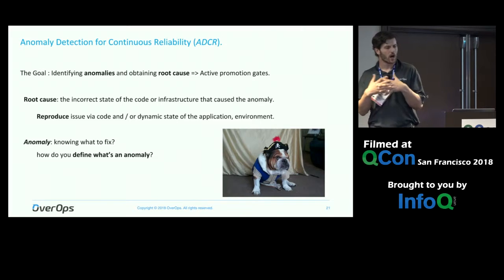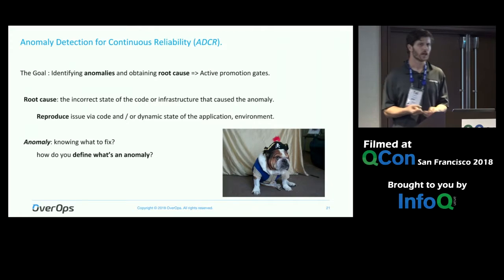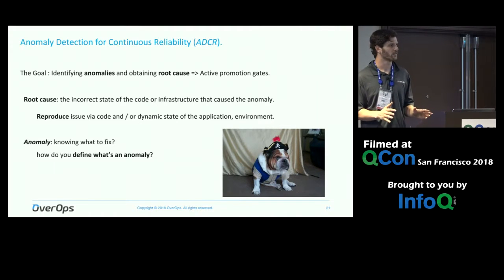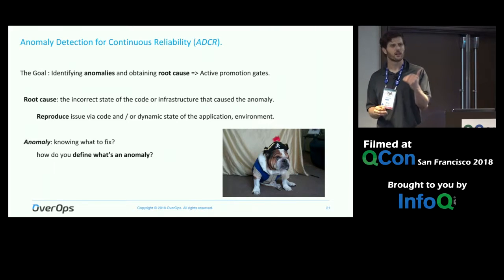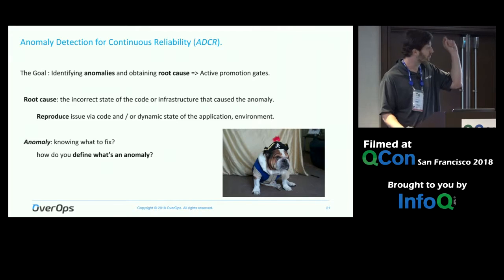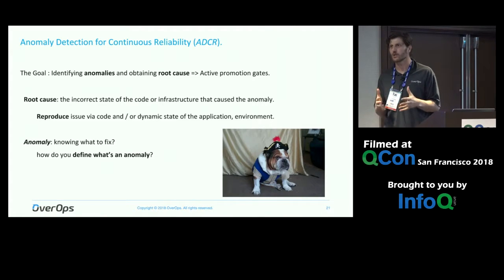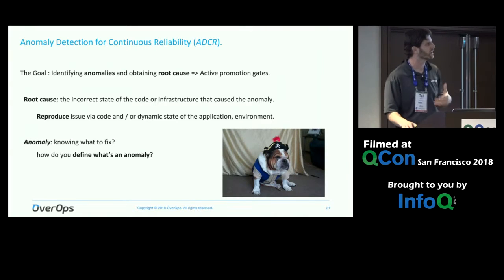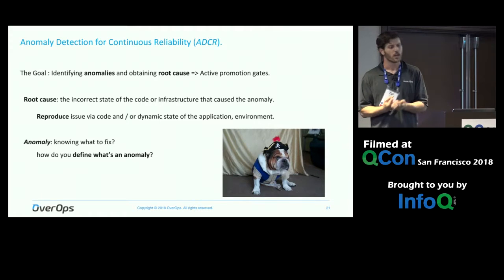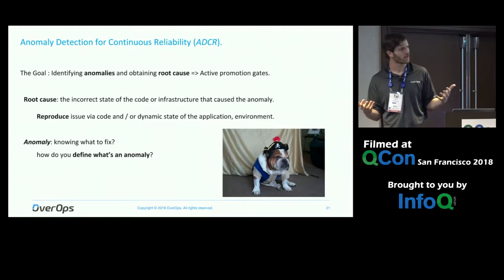Our goal as developers and DevOps, if I break it down to its two most basic core components, is we want to identify anomalies and we want to know what the root cause is. When we ship code out, we want to know what's wrong and why. If you know what the issue is exactly — you have a breakpoint, you're looking at the variable, you know exactly the race condition, which thread was racing with which other thread — life is pretty good. The challenge is how do you get there, how do you get to a process where you know about it before your boss tells you?